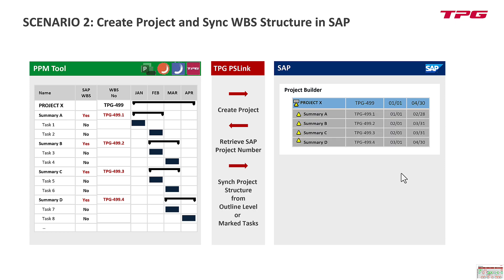We bring the SAP project number back into Planisware and calculate the WBS numbers. Then we upload the WBS elements on the SAP side. Now we have structure identity between the project schedule on the left-hand side and SAP PS on the right-hand side. Of course, the whole story could have started on the SAP side and transferred to the PPM tool, and then we add levels below, like tasks.